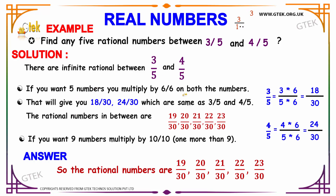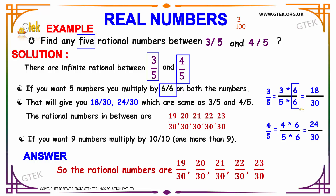With that in mind, let's solve this question. Since we need to find 5 rational numbers between 3/5 and 4/5, keeping 5 in mind, we increment to 6 and multiply 6 in both the denominator and numerator. On multiplying 3 × 6, it's 18, and 5 × 6, it's 30.